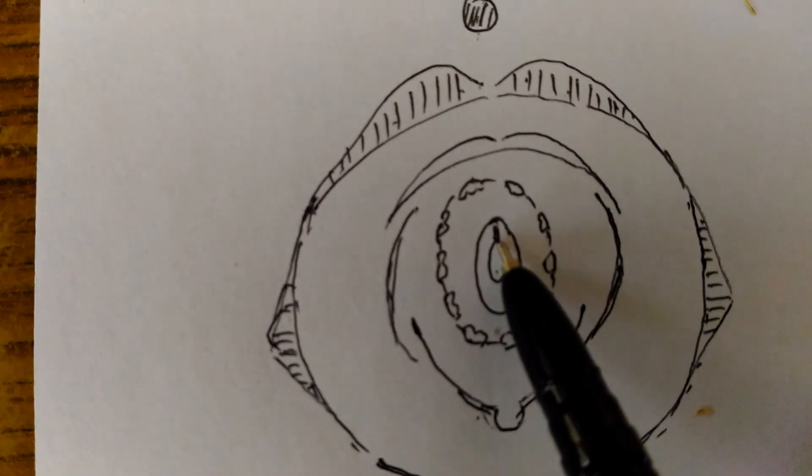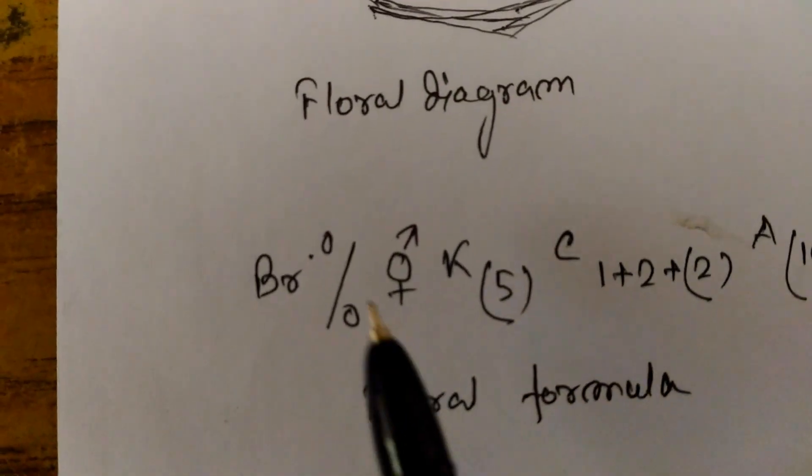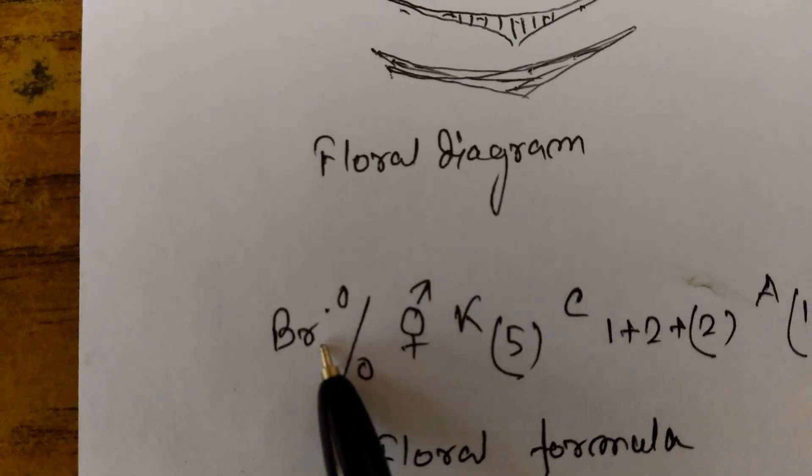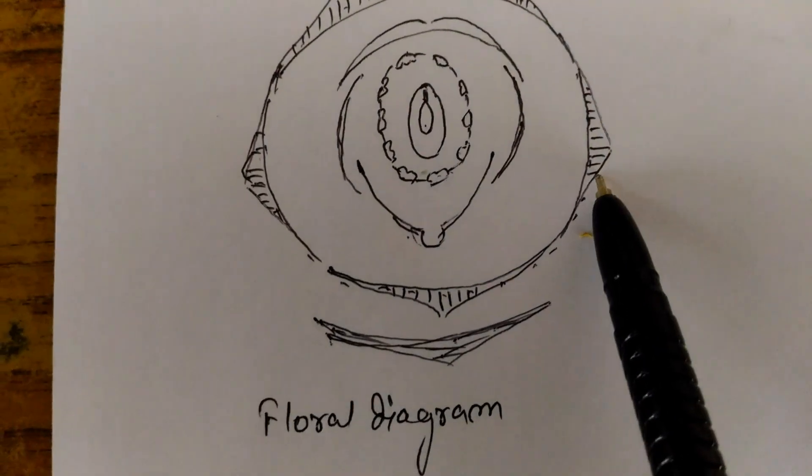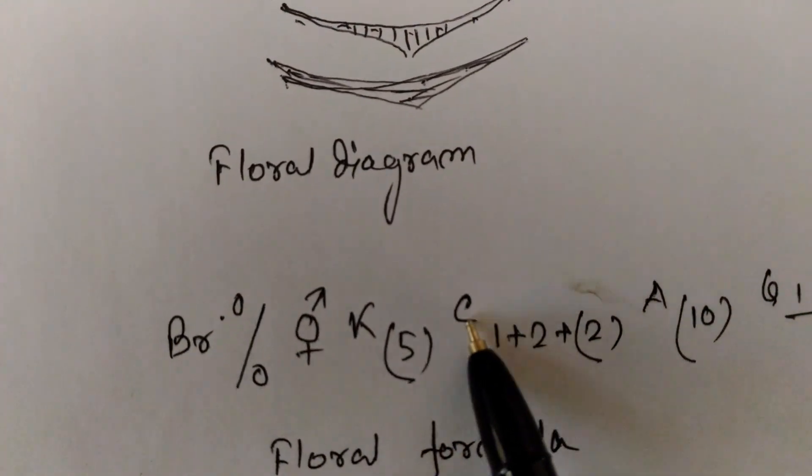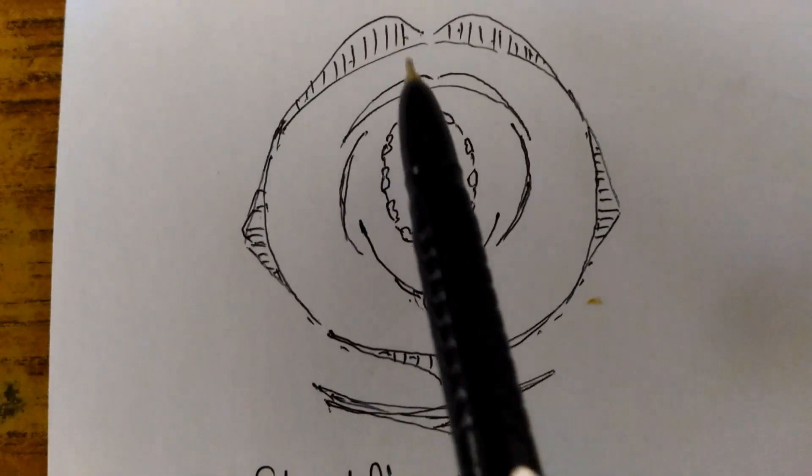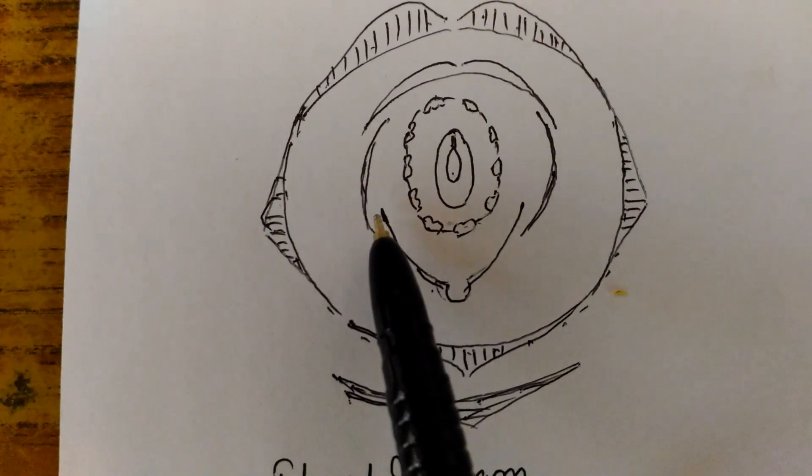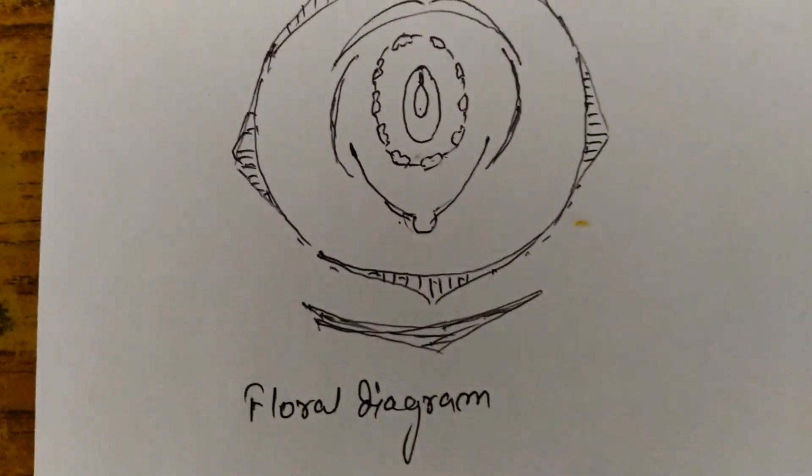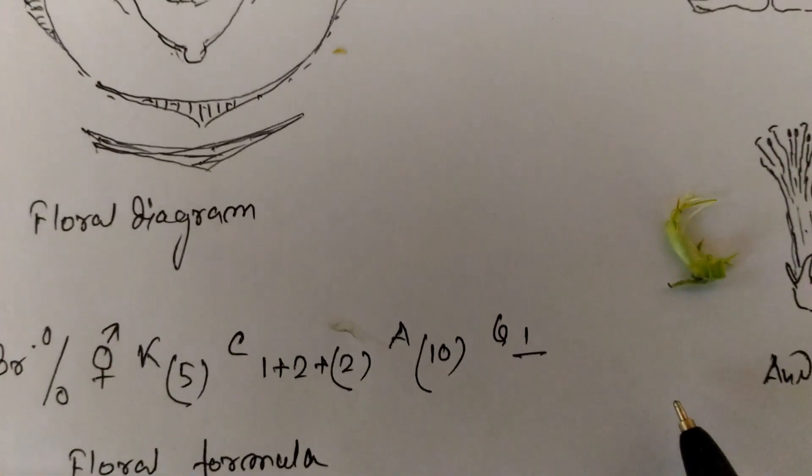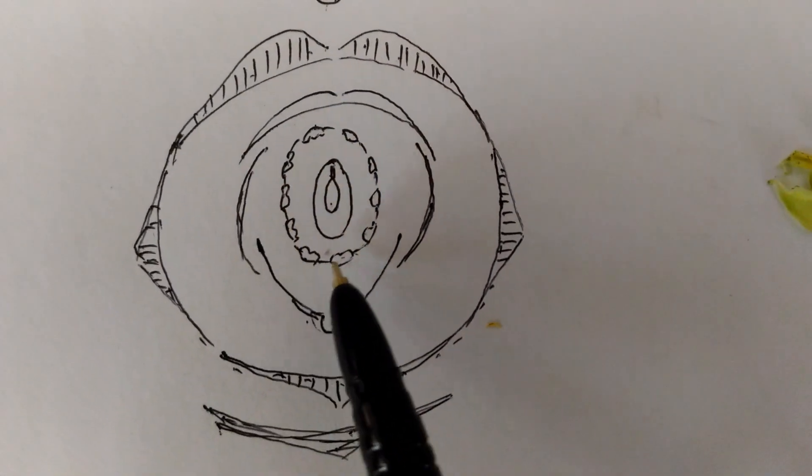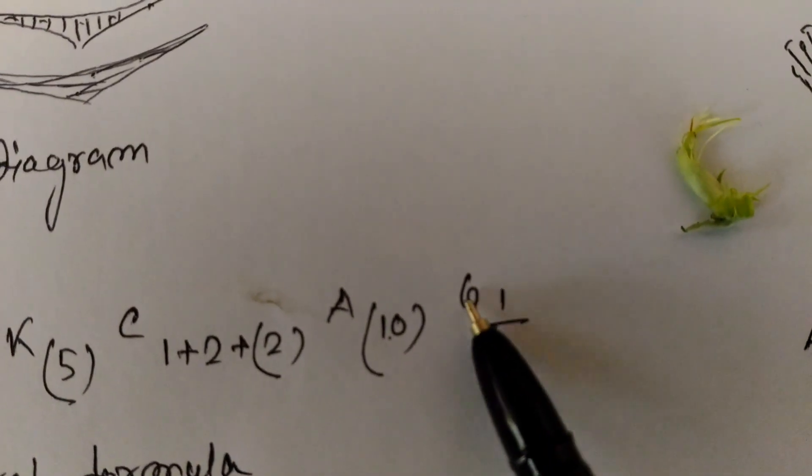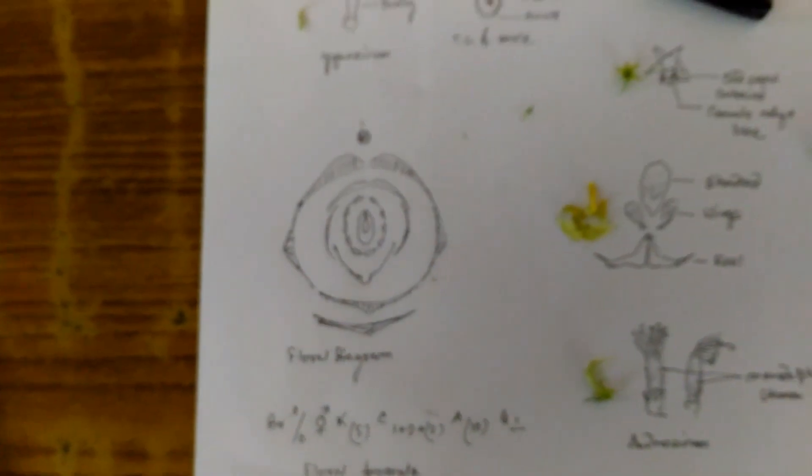This is the ovary in the floral diagram, and this is the floral formula. The flower is bracteate, zygomorphic, bisexual, 5 united sepals, then papillionaceous petals: standard, wings, and keels, and monadelphous stamens united, ten in number. And the carpel, it is monocarpellary; only one carpel is there.